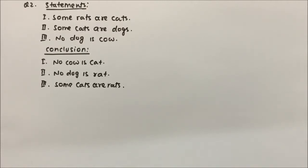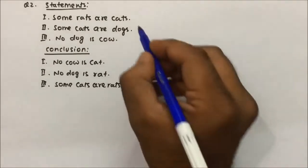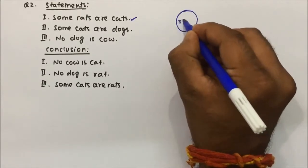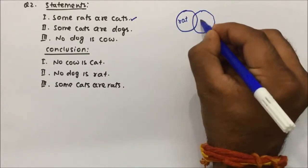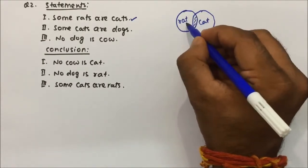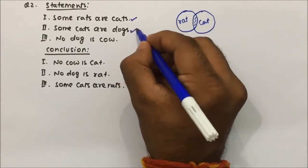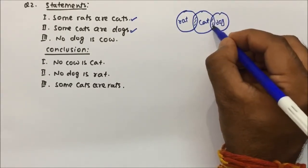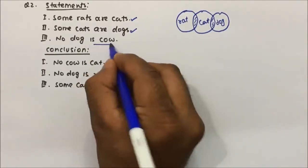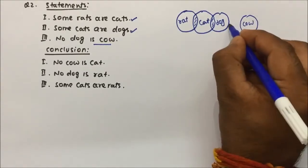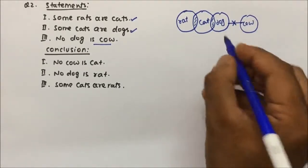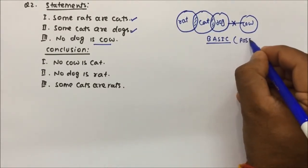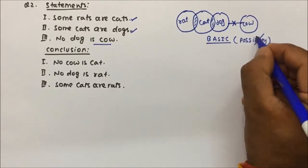Question number 2 — please try to understand it carefully so we will not have any doubt going forward. Statements: Some rats are cat — so this will become rat and this will become cat, some part of rat is cat and some part of cat is rat. Now some cats are dog — some part of cat will be dog and some part of dog will be cat. And no dog is cow — dog and cow have no relation. This is a very basic diagram where possibility will not come into picture.